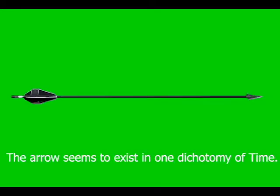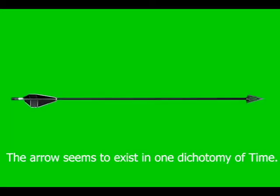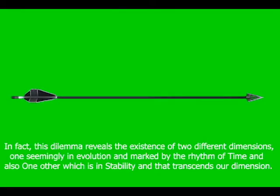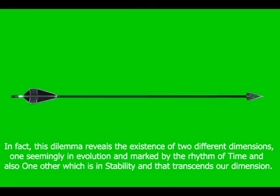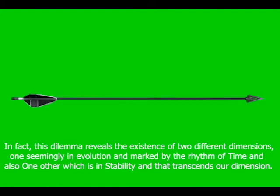The arrow seems to exist in one dichotomy of time. In fact, this dilemma reveals the existence of two different dimensions: one seemingly in evolution and marked by the rhythm of time, and also one other which is in stability and that transcends our dimension.